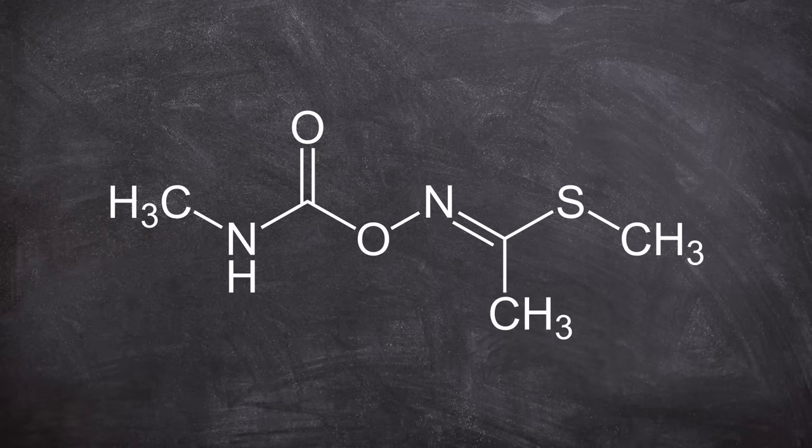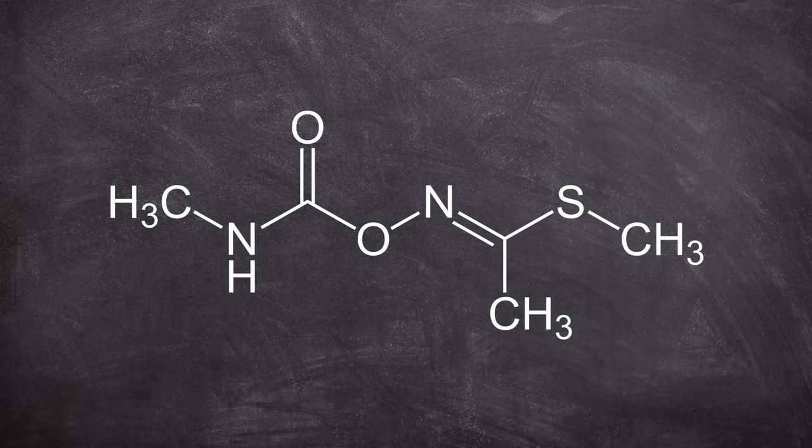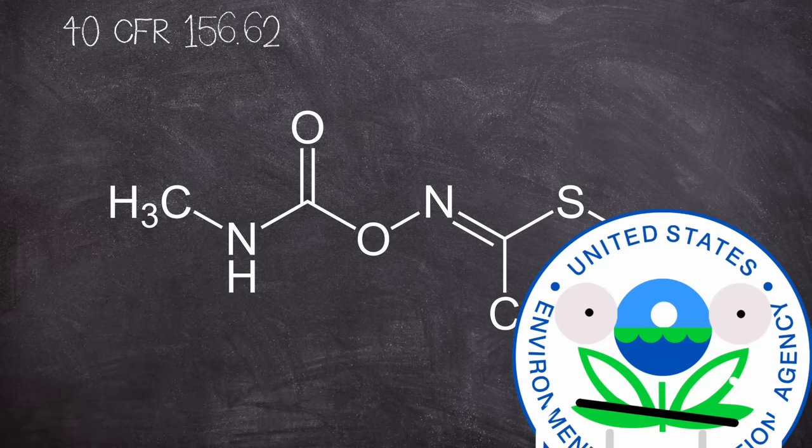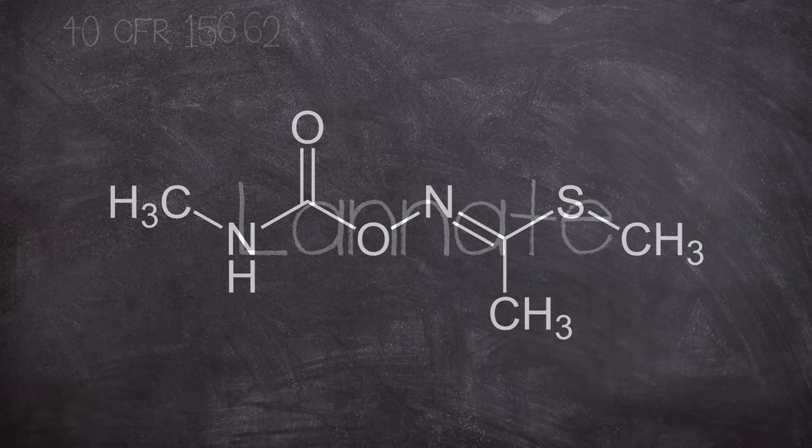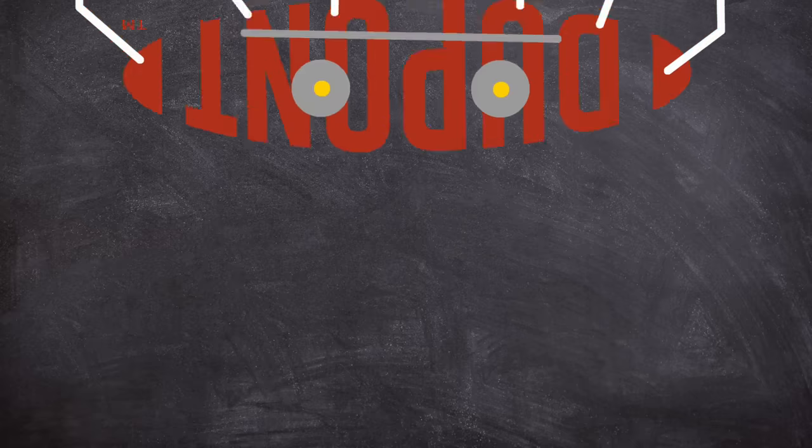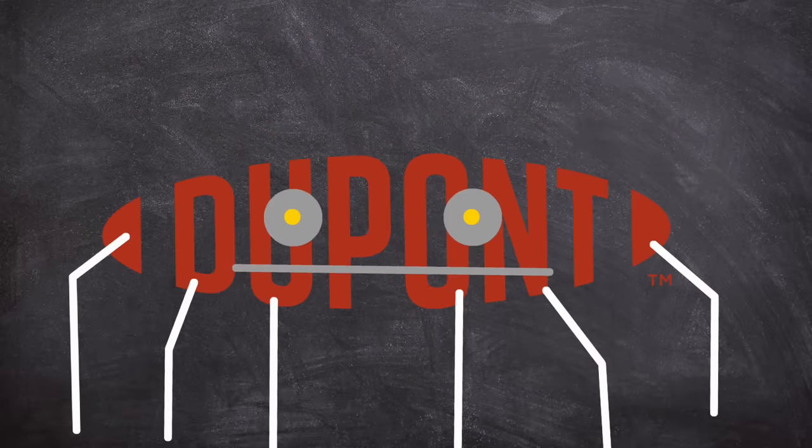Our story begins with this little chemical, Methamyl. It's an insecticide and is rather good at killing stuff. It's even on the EPA's toxicity category 1 list, i.e. very toxic. It's sold under a number of different commercial names, but for this video's purpose, it's sold under the brand name of Lanate, sold by the totally not controversial DuPont company.